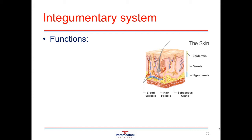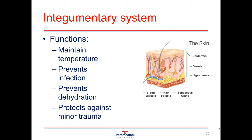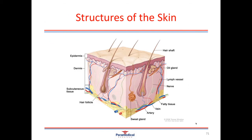The integumentary system, which consists of your skin, hair, and nails, is involved in functions such as maintaining temperature or thermoregulation, preventing infection, preventing dehydration, and protecting against minor trauma such as bumps and scrapes. This is the diagram of the different layers and structures that are in the skin.